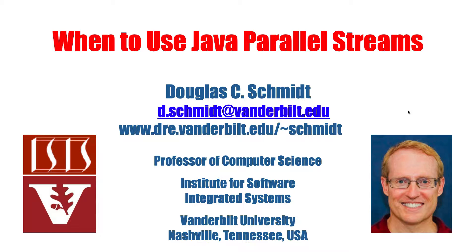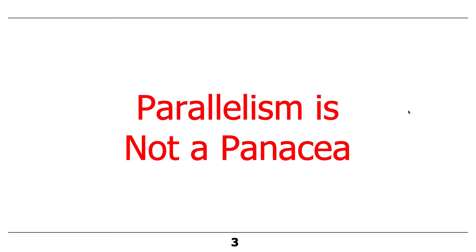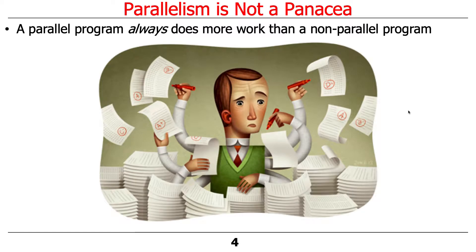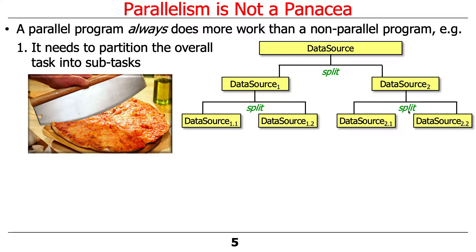There are some situations where it makes a lot of sense to use parallel streams and other situations where it doesn't. First and foremost, parallelism is not a panacea — it doesn't solve all your performance problems. One of the first things you have to recognize is that a parallel program always does more work than a non-parallel program. A parallel program needs to partition the overall task into a bunch of subtasks, and that obviously takes some time.